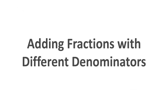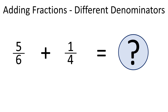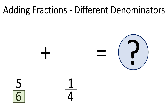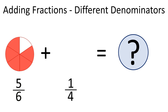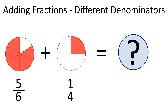Now let's talk about adding fractions with different denominators. How should we add two fractions that have different denominators? A fraction means a whole is divided into equal parts. The denominator tells the number of parts in a whole. In our example, one whole is divided into 6 equal parts and the other into 4 equal parts. To add two fractions with different denominators, we have to find a way to make each denominator the same in each fraction before adding.